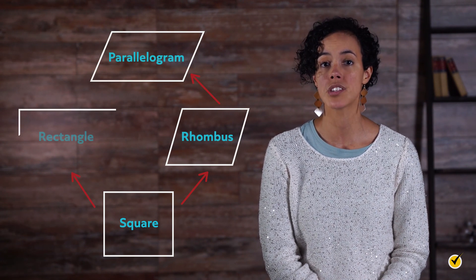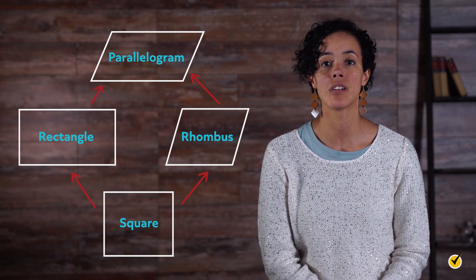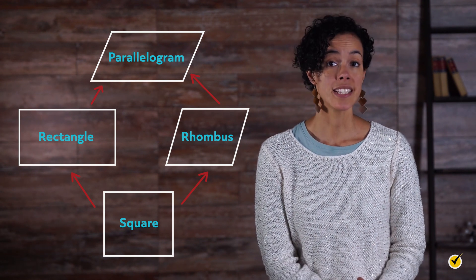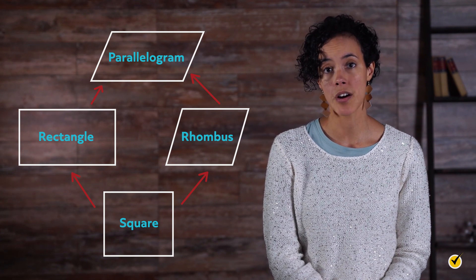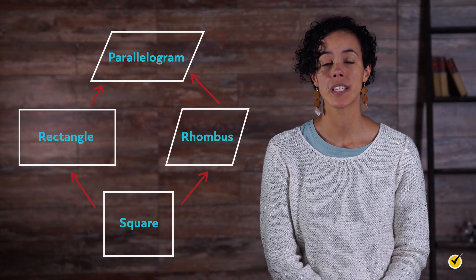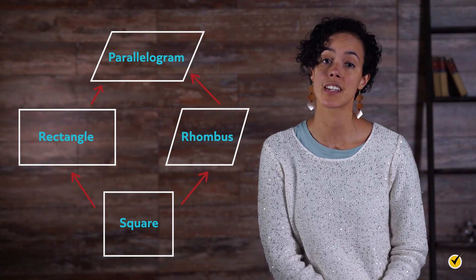Every square is also a rectangle and every rectangle is a parallelogram. That's how it works going up the tree, but it doesn't work going down. Not every parallelogram is a rectangle and not every rhombus is a square.